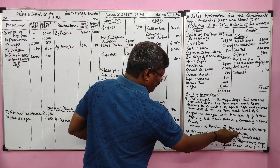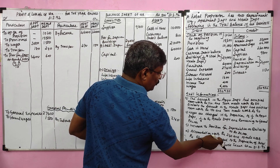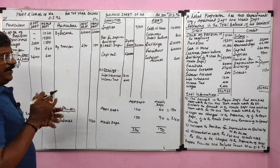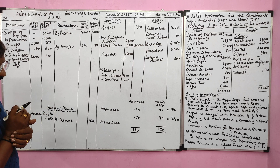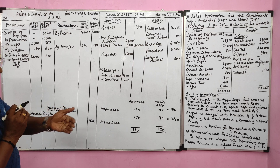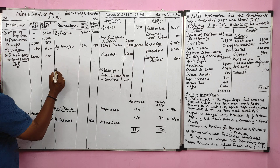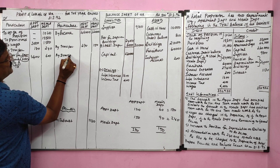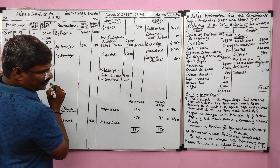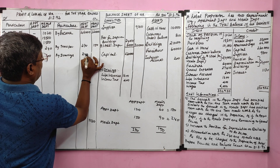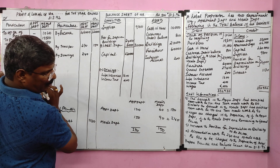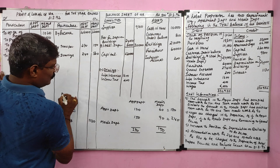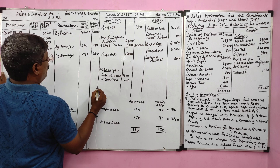Accommodation worth 240 and meals worth 560 to be charged to the proprietor. The owner staying in the accommodation department is worth 240, and meals worth 560. These values are credited in the profit and loss account as drawings and the same amounts are deducted from capital as drawings.